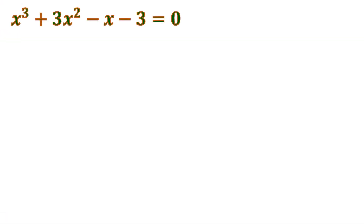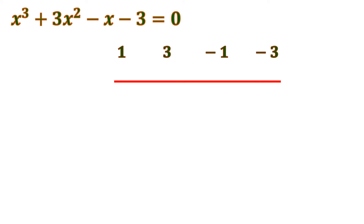Let's have another example. We have x cubed plus 3x squared minus x minus 3 equals 0. We're going to factor this polynomial expression using synthetic division to make it more general. We put the numerical coefficients, the line, and the box. We'll do trial and error to find the right root, but we can limit our options using the rational root theorem — you can check my previous video on that. I'll put the correct root directly to save time, which is negative 3.